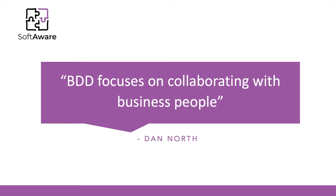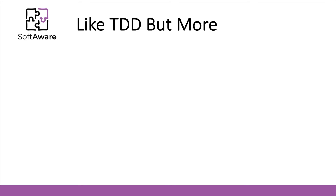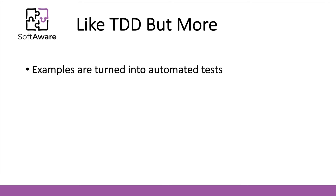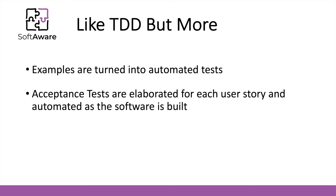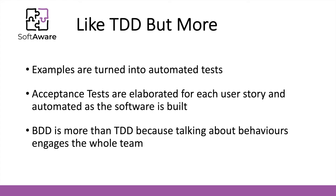BDD focuses mainly on collaborating with business people, as Dan North put it. So it basically is like TDD, but more. Examples are turned into automated tests. This is quite important because TDD promotes automation of tests and BDD continues that work. Acceptance tests are elaborated for each user story and automated as the software is built. Following the approach of TDD, first we build the BDD test — the acceptance test — and then we complete the test according to the software and the specific feature that gets developed. BDD is more than TDD because talking about behaviors engages the whole team, where everyone with a specific role collaborates and produces examples to promote behavior-driven development.